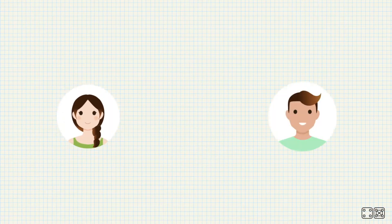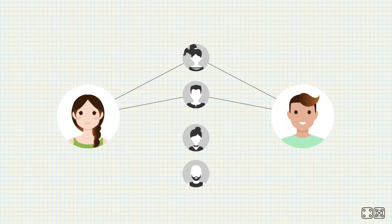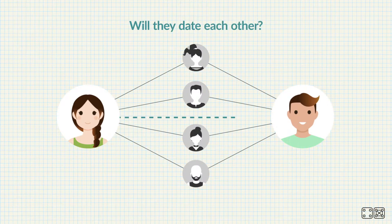This is Alice, and this is Bob. Alice and Bob share a common set of friends. Can we use this common set of friends to predict if Alice and Bob will date?